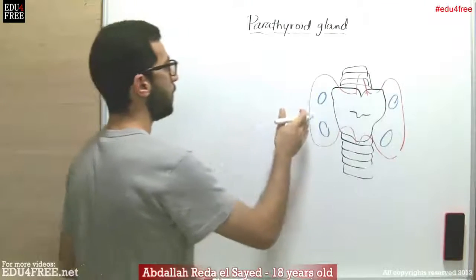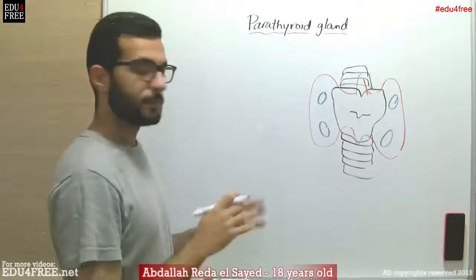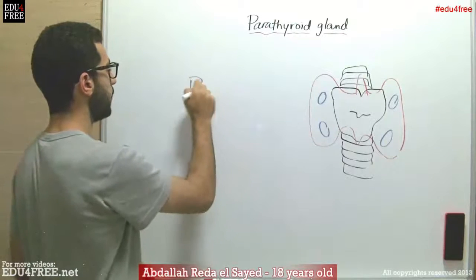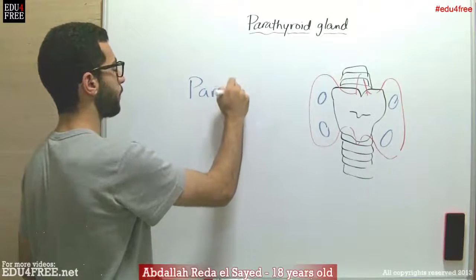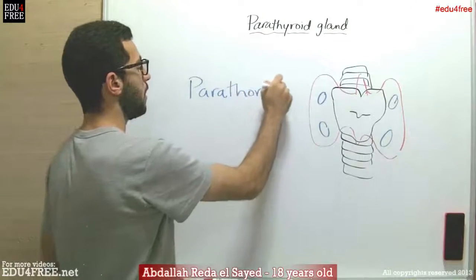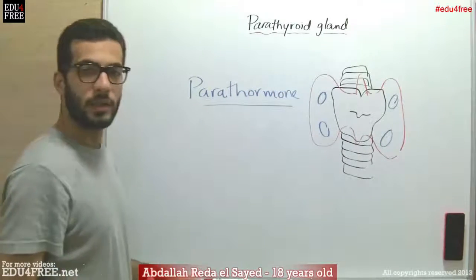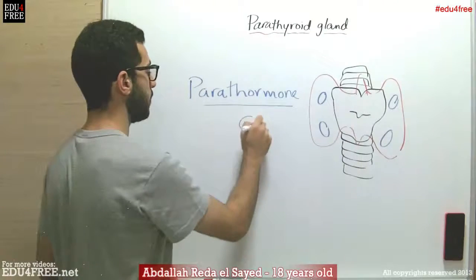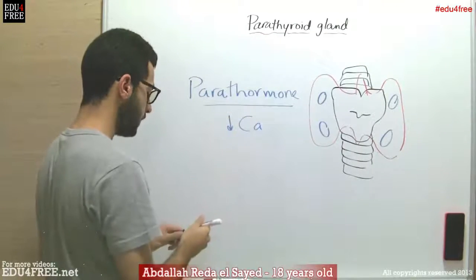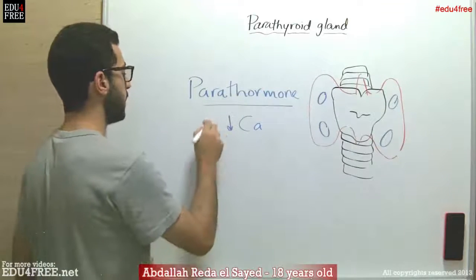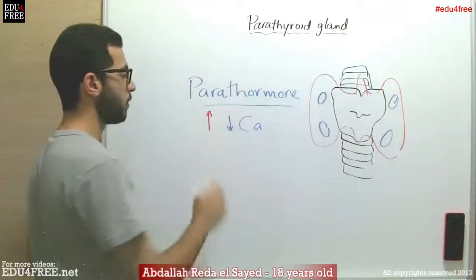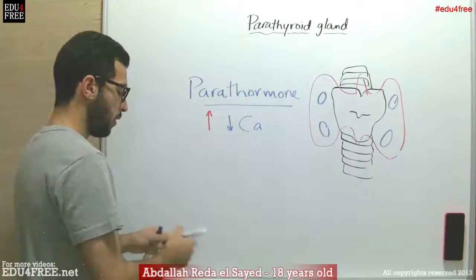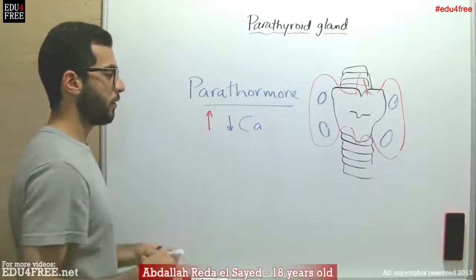The parathyroid gland — all of these glands secrete a hormone called parathormone. This hormone is related to the calcium level in the blood. So when the calcium level in the blood is low, it works on raising the calcium level in the blood, maintaining the normal levels of calcium in the blood. So here we have two effects of parathormone.